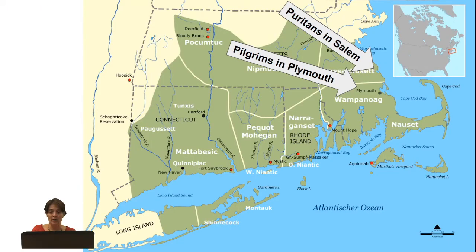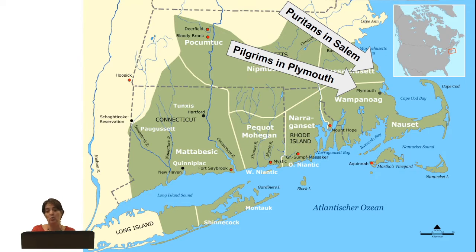A map shows that all the action in the play happens on the east coast of the USA — Salem is slightly north of Plymouth. Apart from this narrow strip of eastern coastline, Europeans had not colonized or explored most of the USA. For the Puritans, most of the continent was completely unknown, inhabited by people who did not worship God — extremely dangerous, and probably what they regarded as the devil's fortress.